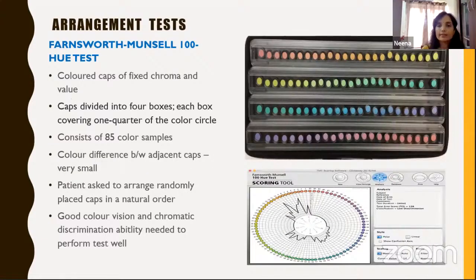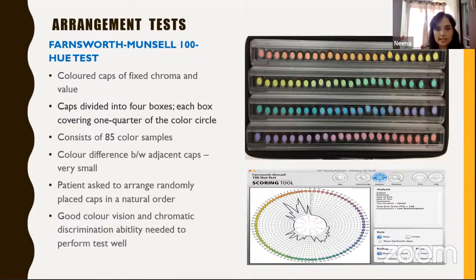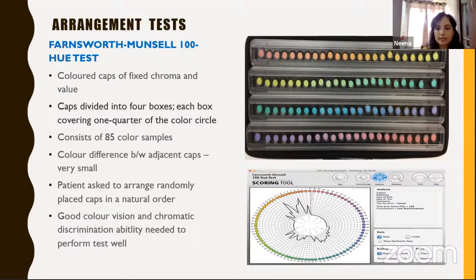Another test is the arrangement test — the Farnsworth-Munsell 100 hue test. It is a detailed, exhaustive test with colored caps of fixed color and value in four boxes, each covering one quarter of the color circle, with about 85 color samples in total. There is a very small difference in color between adjacent caps, and the patient is asked to arrange randomly placed caps in the natural order of color, requiring good chromatic discrimination.